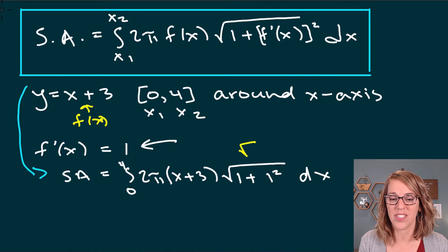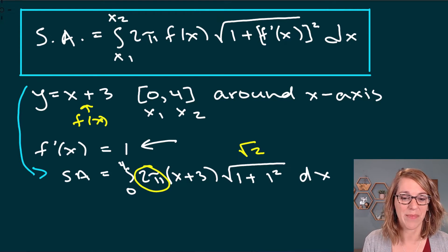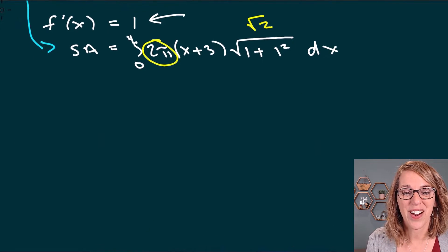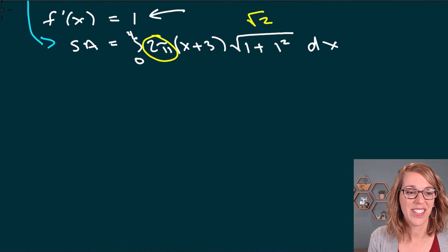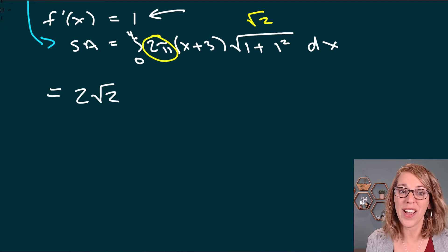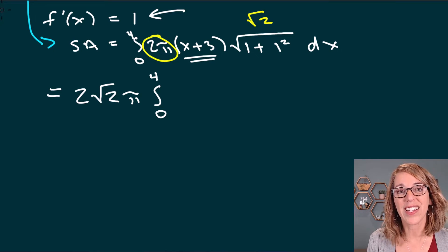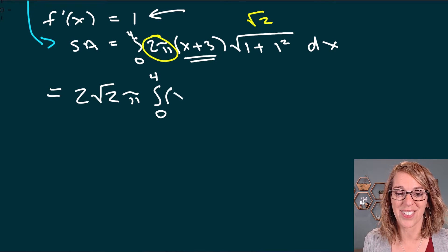The square root of 1 plus 1 is just the square root of 2. I can pull out the 2π in front before taking the integral. So the surface area integral has 2, radical 2, and π out in front, with the integral from 0 to 4, leaving just x plus 3 dx on the inside.